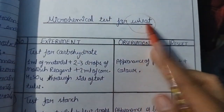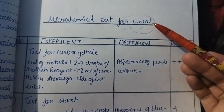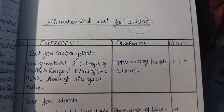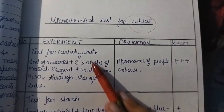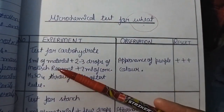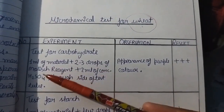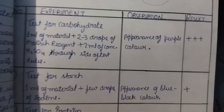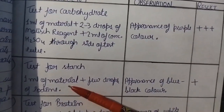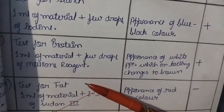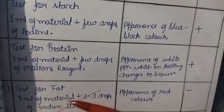Here we will talk about the microchemical test for wheat, and I will directly tell you the procedure and the chemicals required for different types of tests. The first one is the test for carbohydrate — for carbohydrate testing we use Molisch reagent along with concentrated H2SO4. For the test of starch we use iodine solution. For the test of protein we use Millon's reagent, and for testing the presence of fat we use Sudan III.